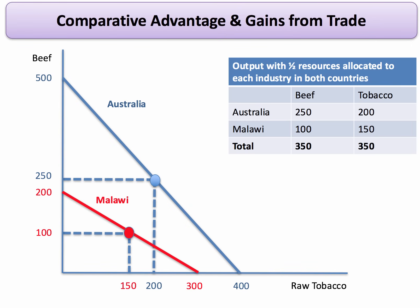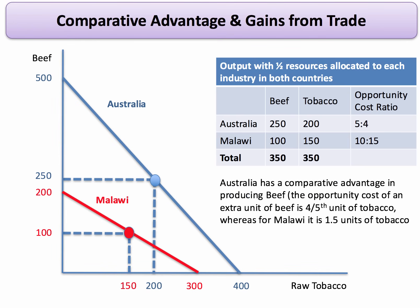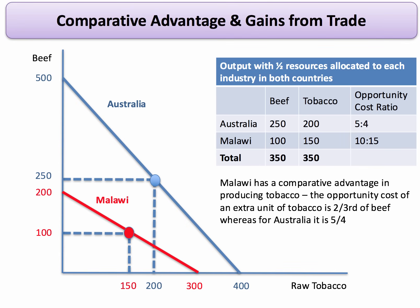Malawi looks to be relatively better at producing tobacco, and we find this by thinking about opportunity cost. The opportunity cost ratio for beef to tobacco — in other words, how many units of beef you give up when you produce more tobacco — is 5 to 4 for Australia, but only 10 to 15 for Malawi. So for Australia, the comparative advantage is in producing beef, because producing an extra unit of beef means giving up four-fifths of a unit of tobacco, whereas for Malawi they give up one and a half units. Malawi has a comparative advantage in tobacco: the opportunity cost of producing more tobacco is two-thirds of a unit of beef for Malawi, whereas for Australia it's five over four.